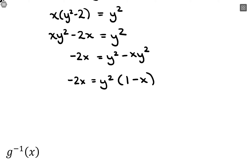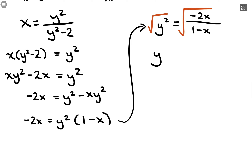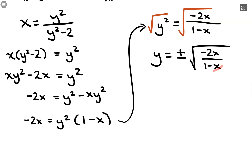This sets up y alone on one side. Dividing both sides by (1 − x): y² = −2x/(1 − x). Then taking the square root of both sides — which when solving gives us plus or minus — we get y = ±√(−2x/(1 − x)). It isn't pretty, but it describes the output value given an input. You don't want to see y anywhere on the right side; it should just be in terms of x. What we ended up with here are actually two equations: one positive and one negative √(−2x/(1 − x)).